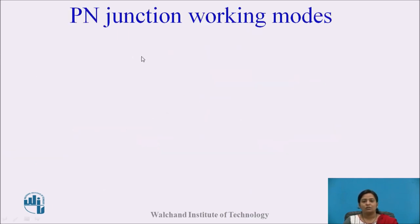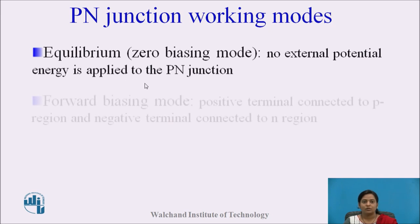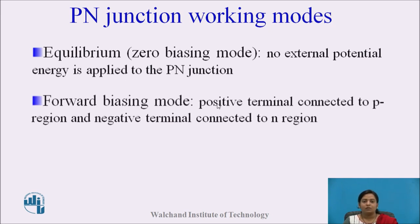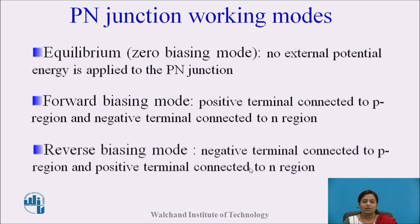The P-N junction works basically in three modes. First, equilibrium, also called zero biasing mode — here no external supply is applied to the P-N junction. Second, forward biasing mode — the positive terminal of external DC source is connected to the P-region and the negative terminal is connected to the N-region. And in reverse biasing mode, the negative terminal of the external DC source is connected to the P-region and the positive terminal is connected to the N-region.